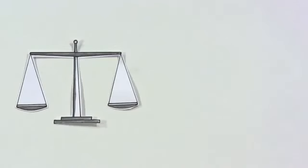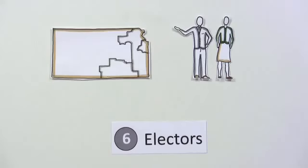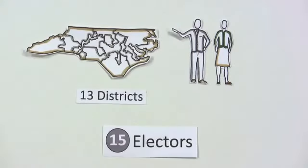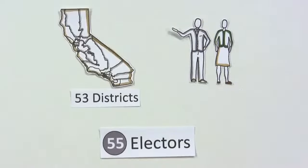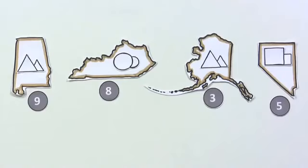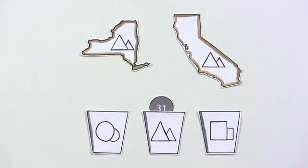The influence a state has in the election is measured by the number of electors. This number comes from the number of districts in a state plus the number of U.S. senators, which is always 2. North Carolina has 15 electors, while California has 55. When a candidate wins the voting in a state, they win that state's number of electors. That's why big, populous states can be so important to candidates — their electors add up quickly.